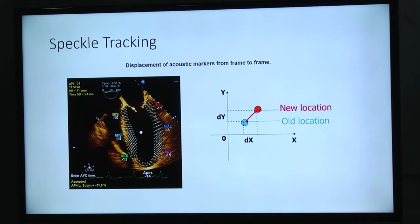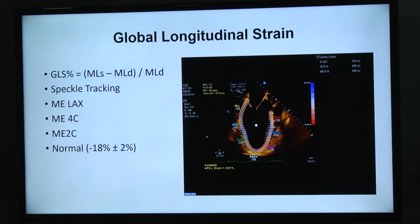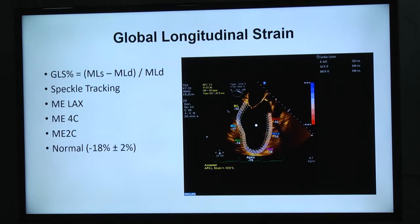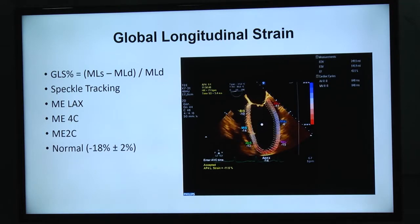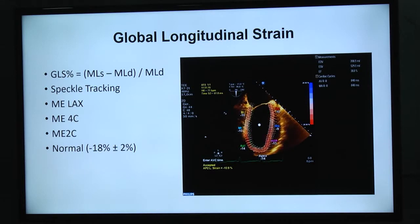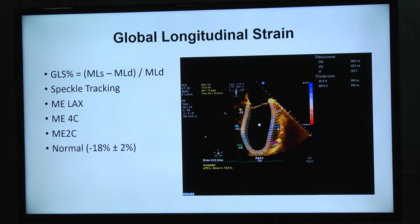Speckle tracking is an automatic analysis of the displacement of specific acoustic markers in the myocardium from frame to frame, and it's possible to obtain global systolic longitudinal strain — the most used strain parameter. We perform speckle tracking starting with the mid-esophageal long axis view, because in this view we can set the aortic valve closure time, which is very important, and then the four-chamber view and two-chamber view. Normal values differ between vendors and software versions, but as a general guidance, normal GLS is approximately -20%.